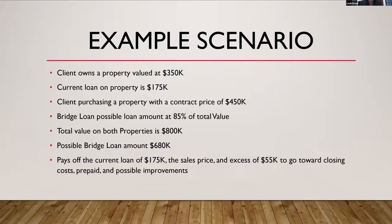Depending on the bank or financial institution, you can have a bridge loan at 80% to 85% of the total value of both properties. In this case, the total value on both properties is $800,000, so you could have a possible bridge loan all the way up to $680,000.